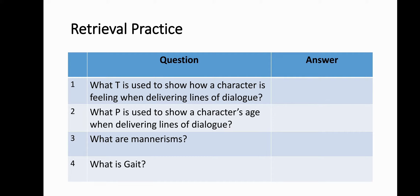Number 1: What T is used to show how a character is feeling when delivering lines of dialogue? Number 2: What P is used to show a character's age when delivering lines of dialogue? Number 3: What are mannerisms? Number 4: What is gait? Your teacher will pause the video here for you to write down your answers.